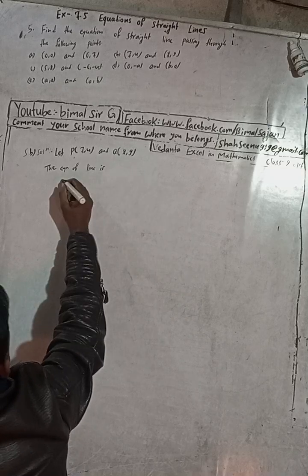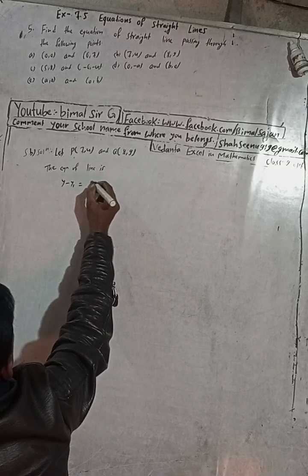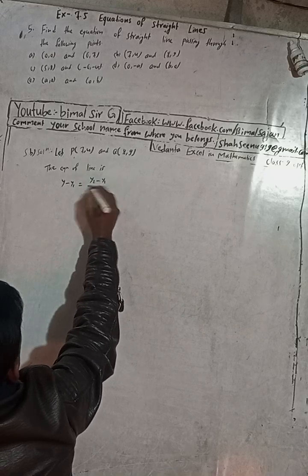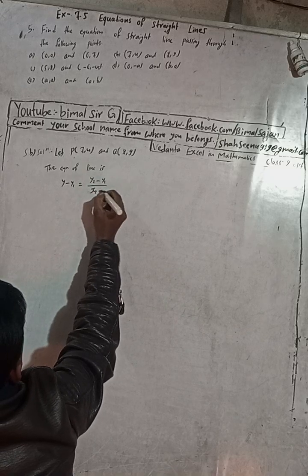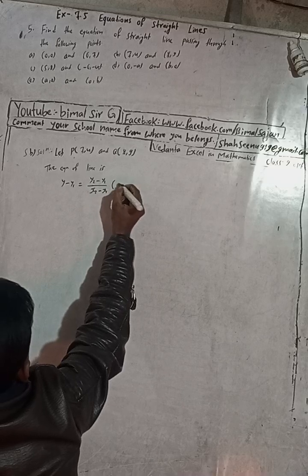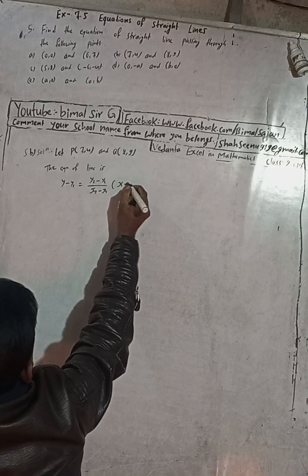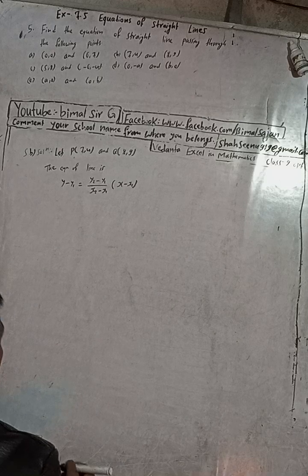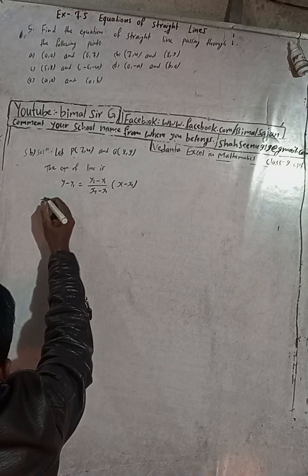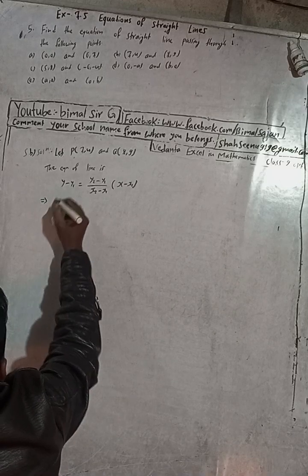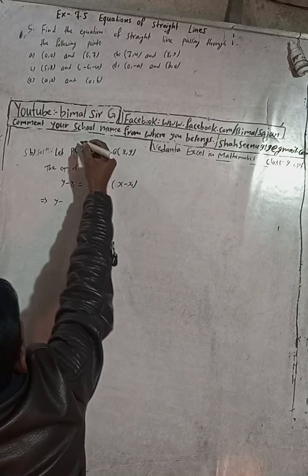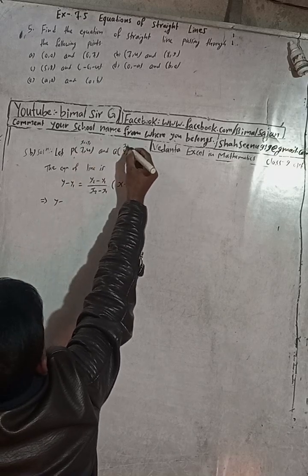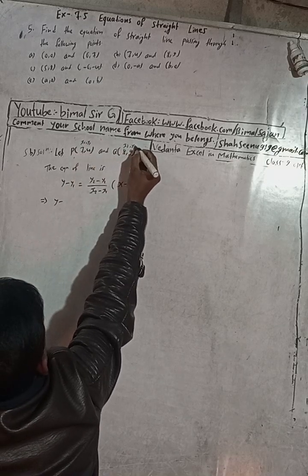Let P be (7, 4) and Q be (8, 9). So x1 = 7, y1 = 4, x2 = 8, y2 = 9. The equation of the line is y minus y1 equals (y2 minus y1) divided by (x2 minus x1), into (x minus x1).